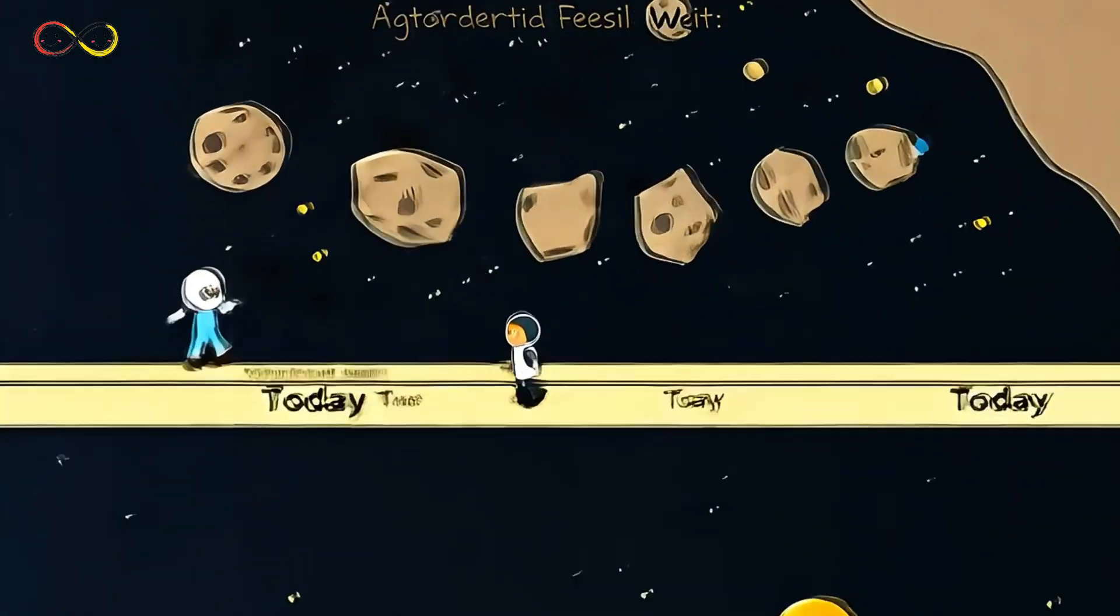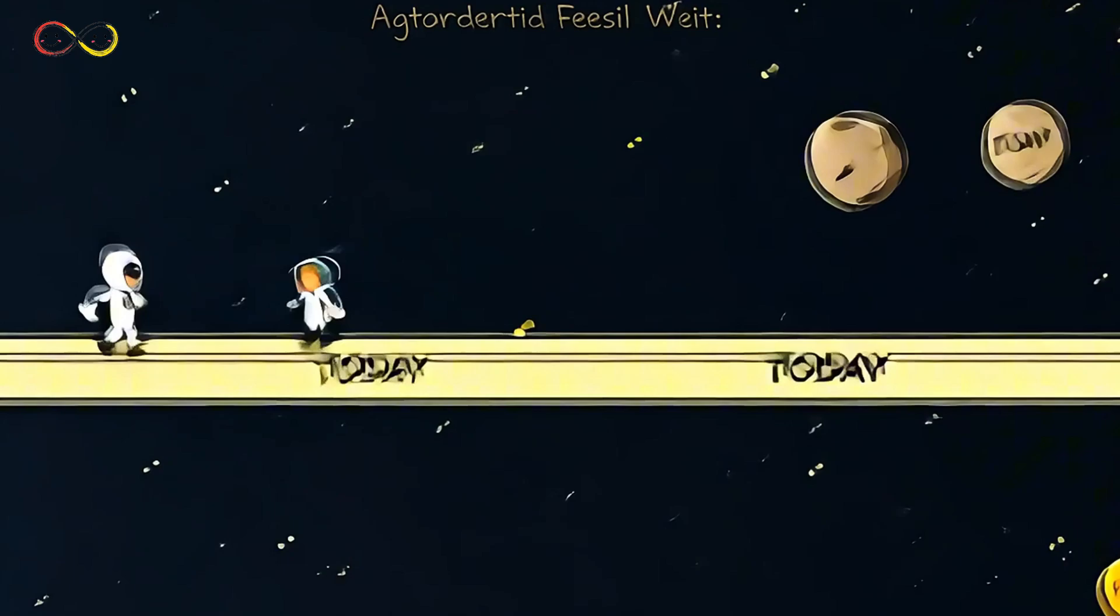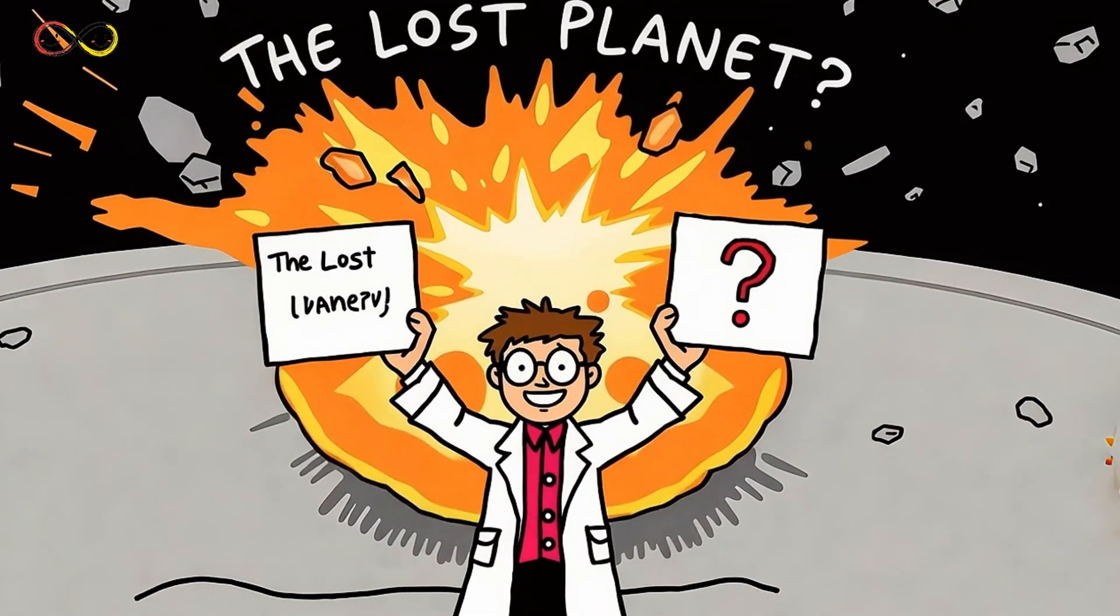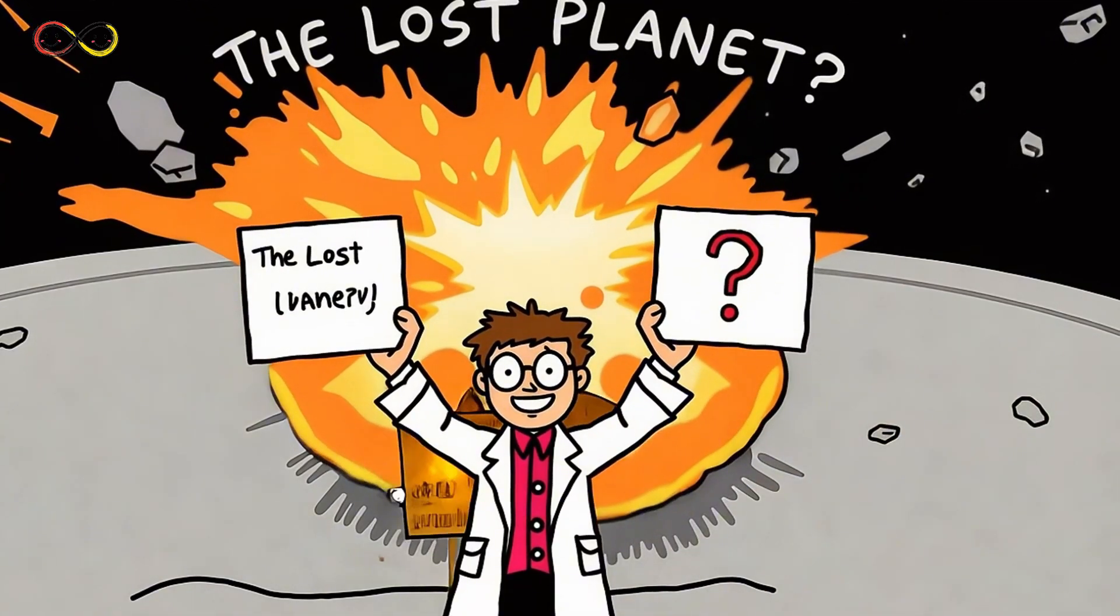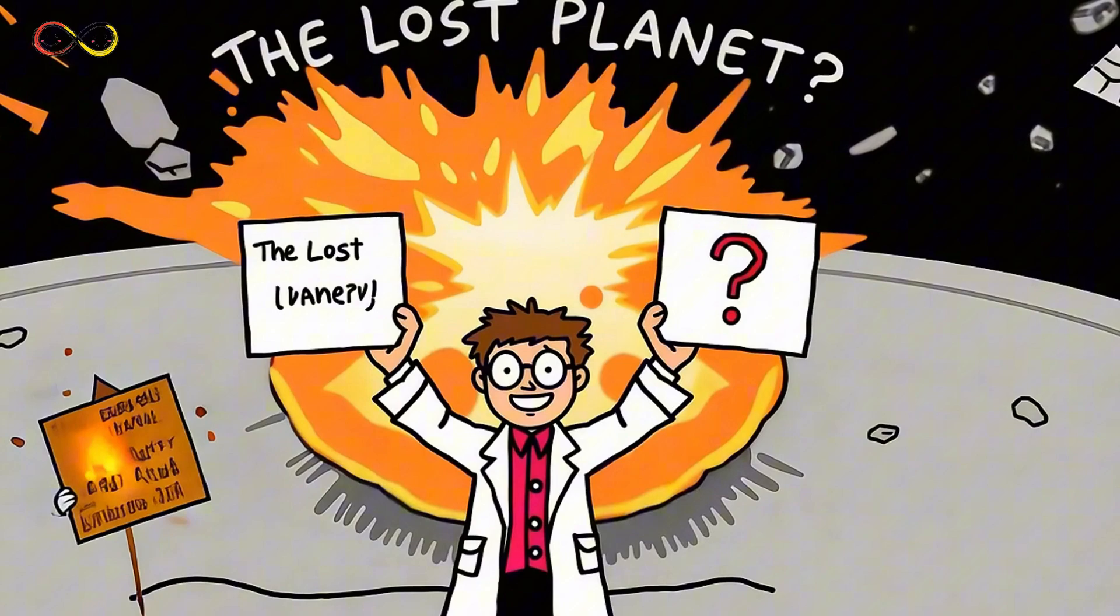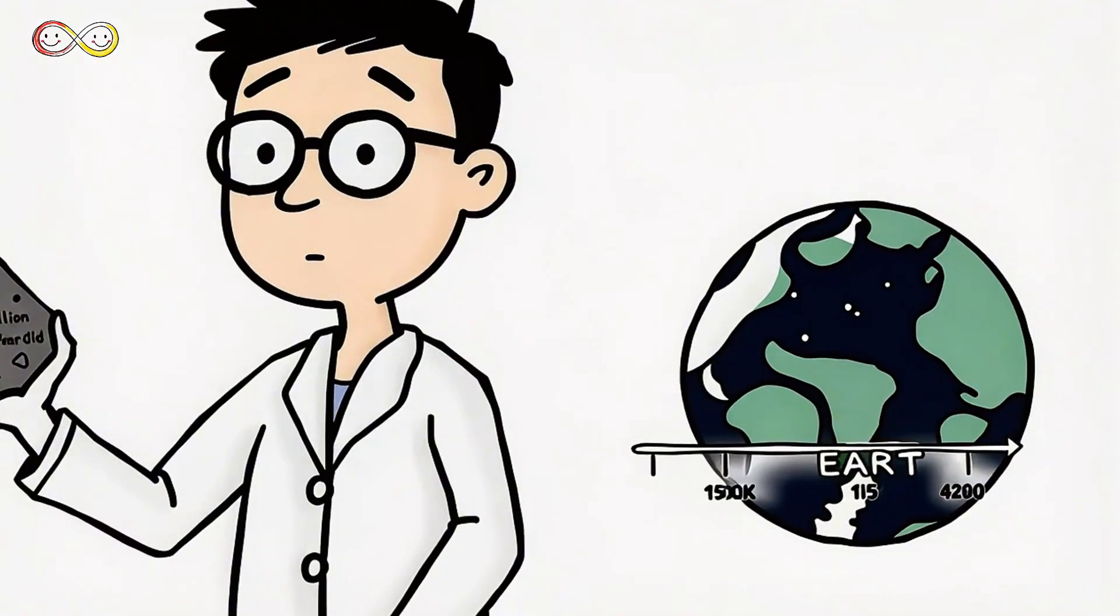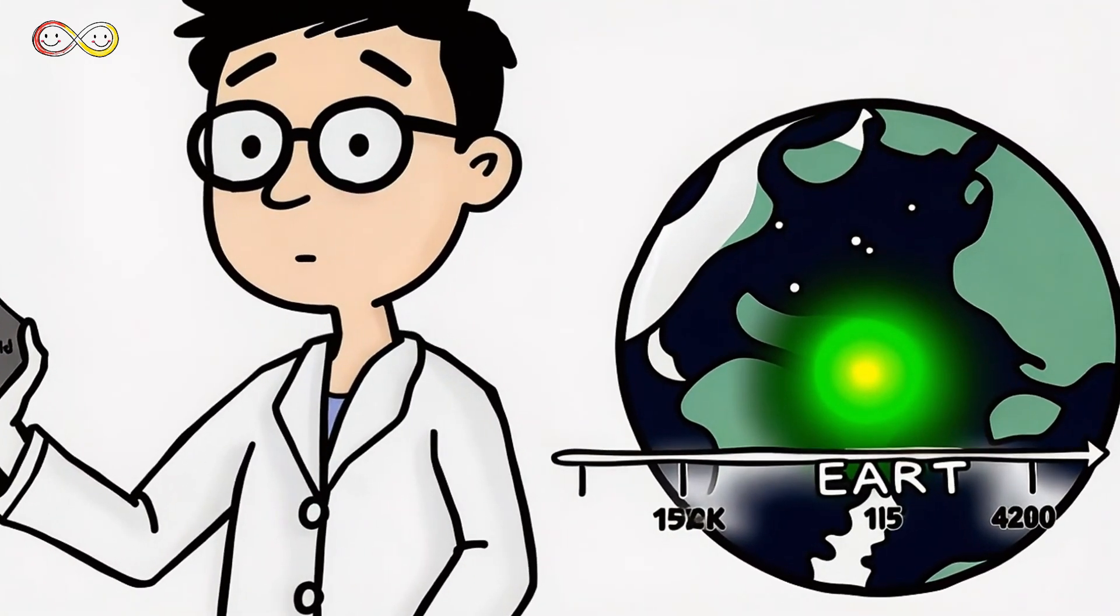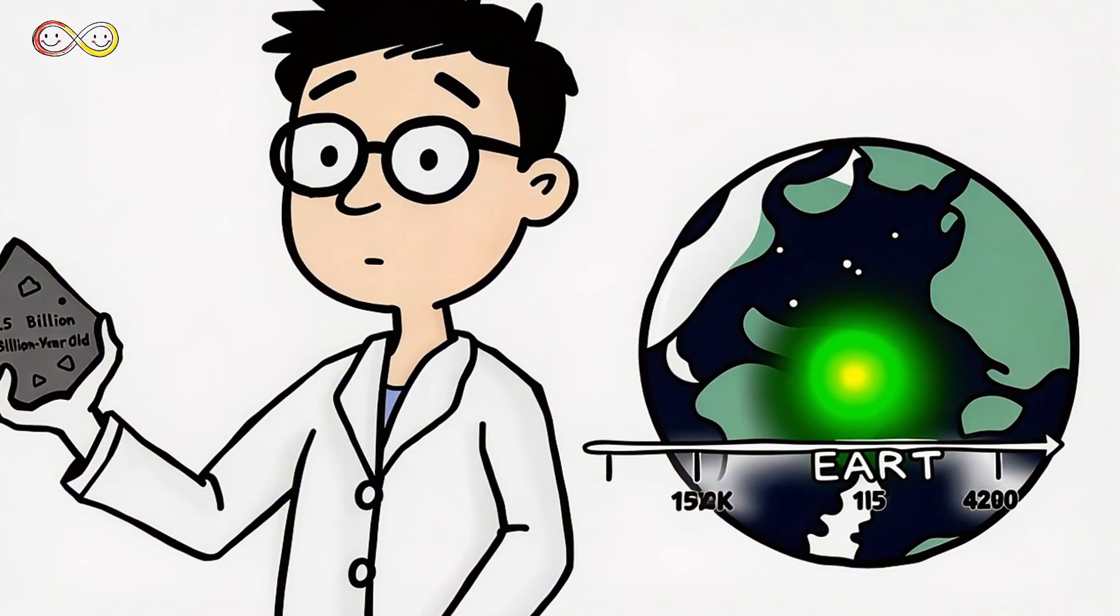Instead of becoming a planet, these rocks became trapped in orbit around the sun. For billions of years, they stayed in place, forming what we now call the asteroid belt, a fossil from the birth of the solar system. Scientists now believe the asteroid belt was never a single planet. The asteroids are simply leftover building blocks that never found a home. They are time capsules from the dawn of our solar system.